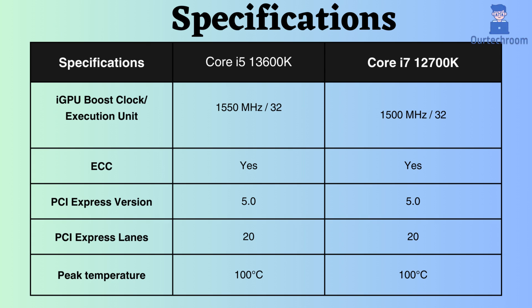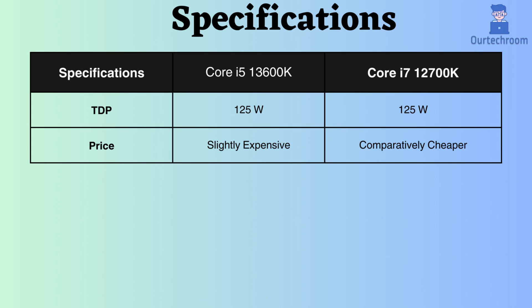Both processors can operate at temperatures up to 100 degrees Celsius, and their thermal design power (TDP) is 125 watts. In terms of pricing, the Core i5-13600K is higher than that of the Core i7-12700K.